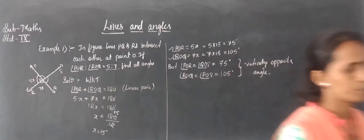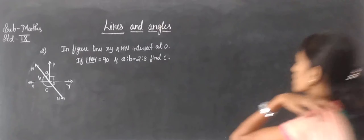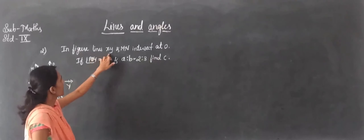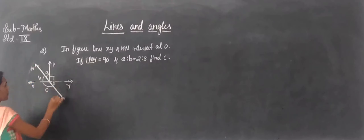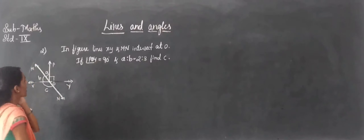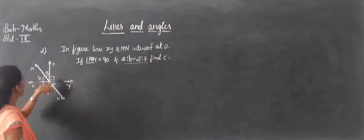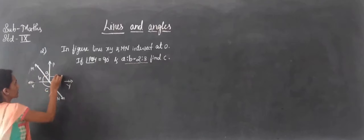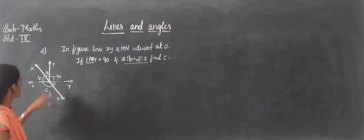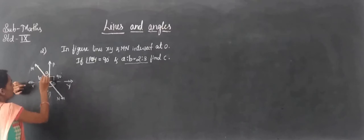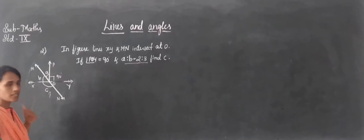Next example: Lines XY and MN intersect at point O. The ratio of angle A to angle B is 2 to 3, and angle POQ is given as 90 degrees. We have to find angle C.